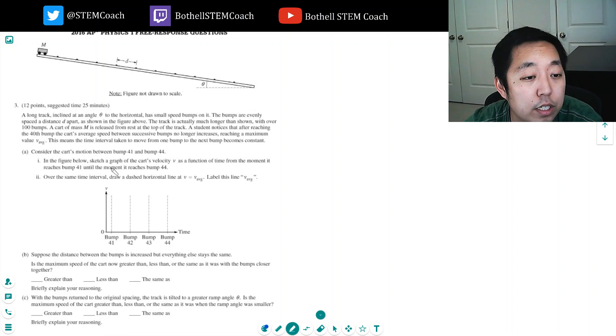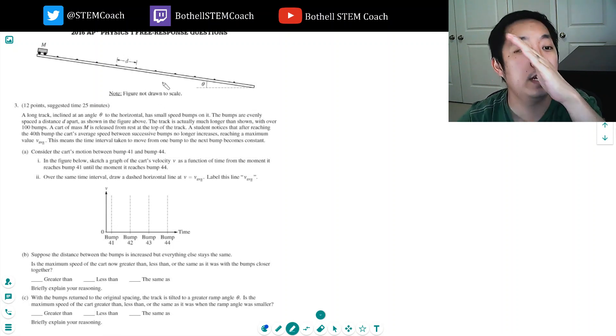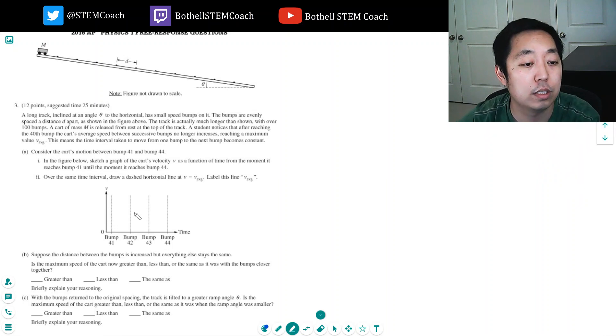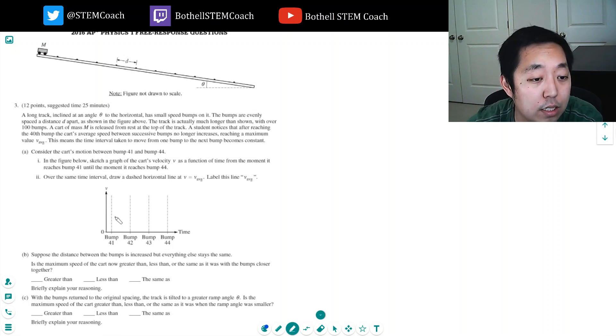In the figure below, sketch a graph of the cart's velocity v as a function of time the moment it reaches bump 41. Okay, so after 40 bumps it's sort of like accelerating then slows down, accelerating slows down. Now it's accelerating due to gravity so it's under a constant force which means constant acceleration, so the velocity has to be constant. So it'll be kind of going like this, then drops back down, then drops back down.